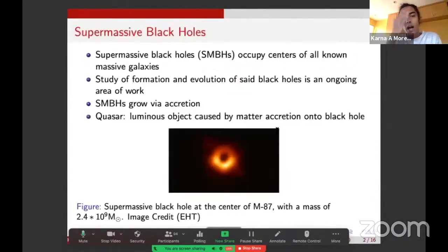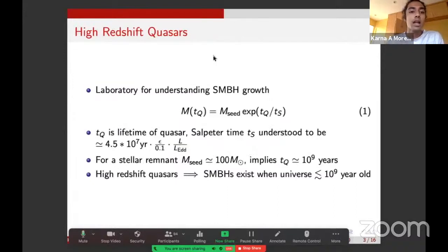First of all, the main motivation for this work is understanding more about supermassive black holes. Supermassive black holes occupy the centers of all known massive galaxies, and the study of the formation and evolution of these black holes is an ongoing area of work. These black holes grow primarily via accretion. One way in which we can study this process is via quasars, which are extremely luminous objects caused by matter accretion onto black holes. These quasars, especially at high redshift, are an extremely powerful laboratory for understanding supermassive black hole growth in the early universe.